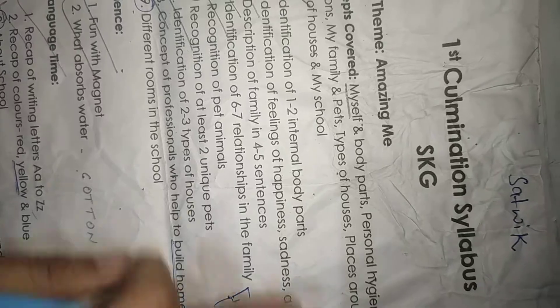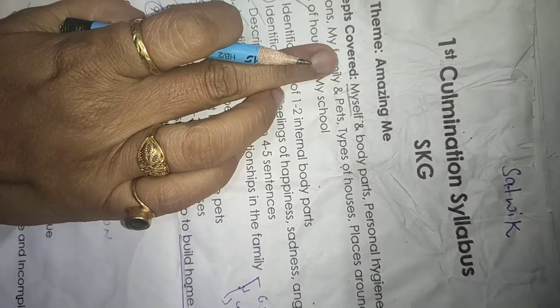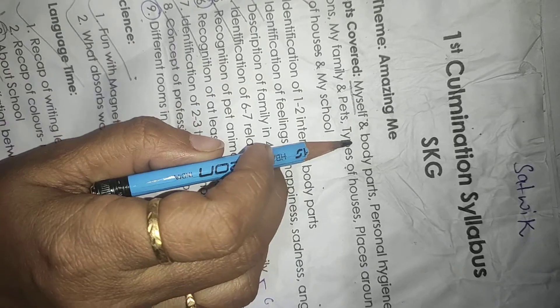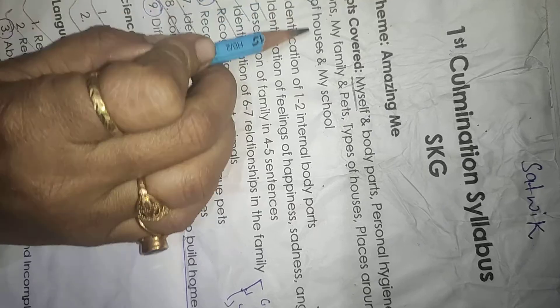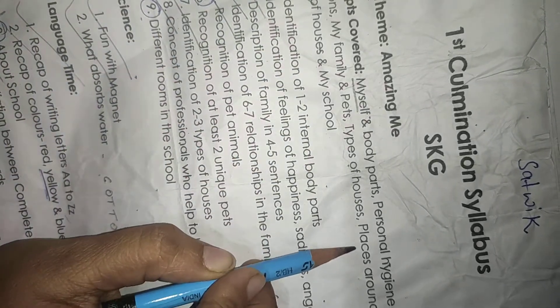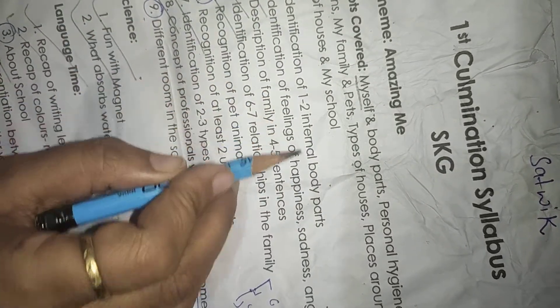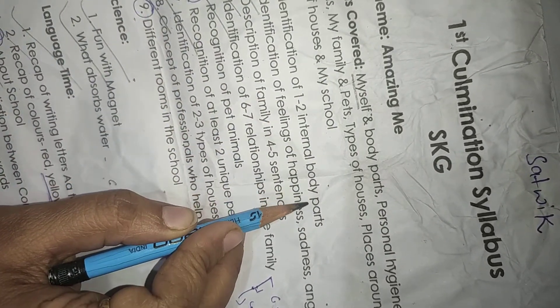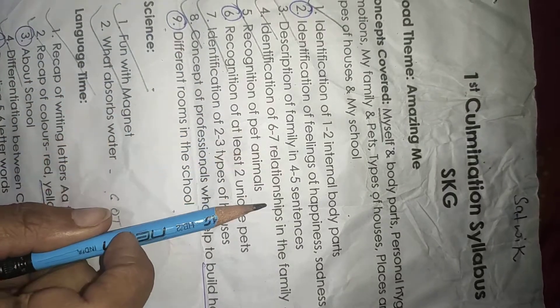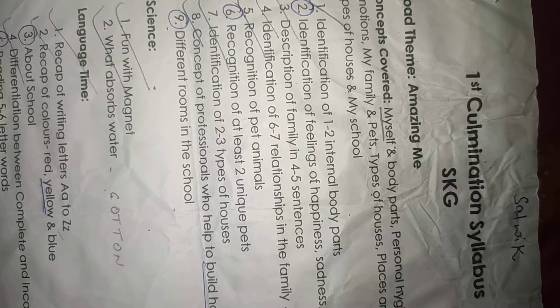First, I have concepts covered: myself and body parts, personal hygiene, my emotions, my family, types of house, places around me, identification of internal body parts, different rooms in the school, concept of professionals who help to build a home, and identification of six to seven relationships in the family.